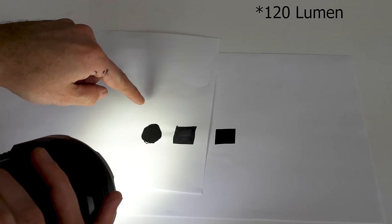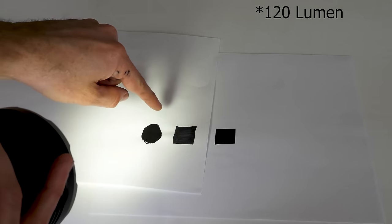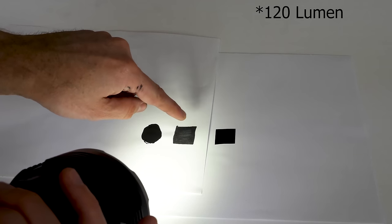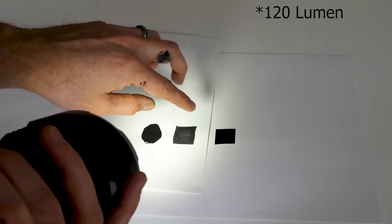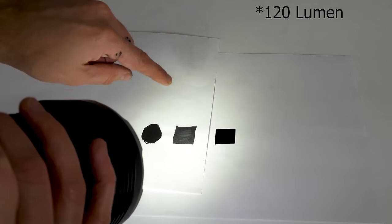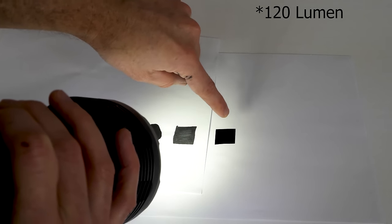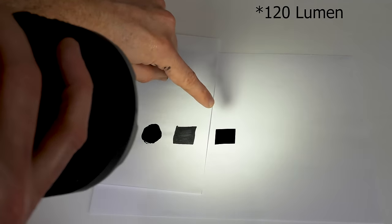Okay, so we'll start off with 120 lumens. You can see that the black 2.0 is doing pretty good at absorbing most of this. The black Sharpie marker, you can see it's not really absorbing all of it. There's a little white coming through. It's not very black, but then my black here is still just as black as can be.